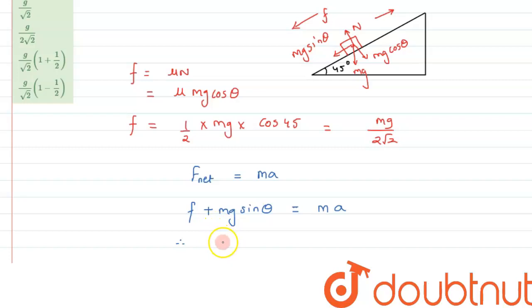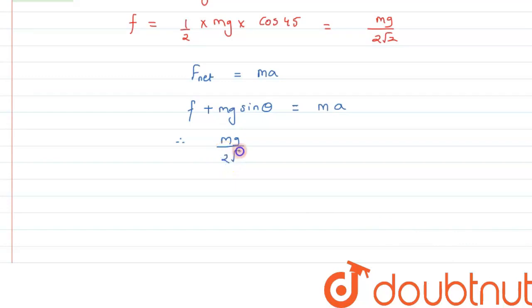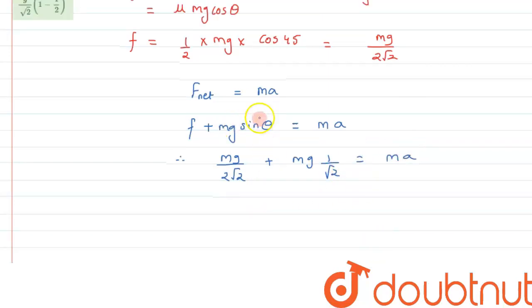Therefore we can write f can be written as mg upon 2 root 2 plus mg sin theta can be written as 1 over root 2, and that is equal to ma.